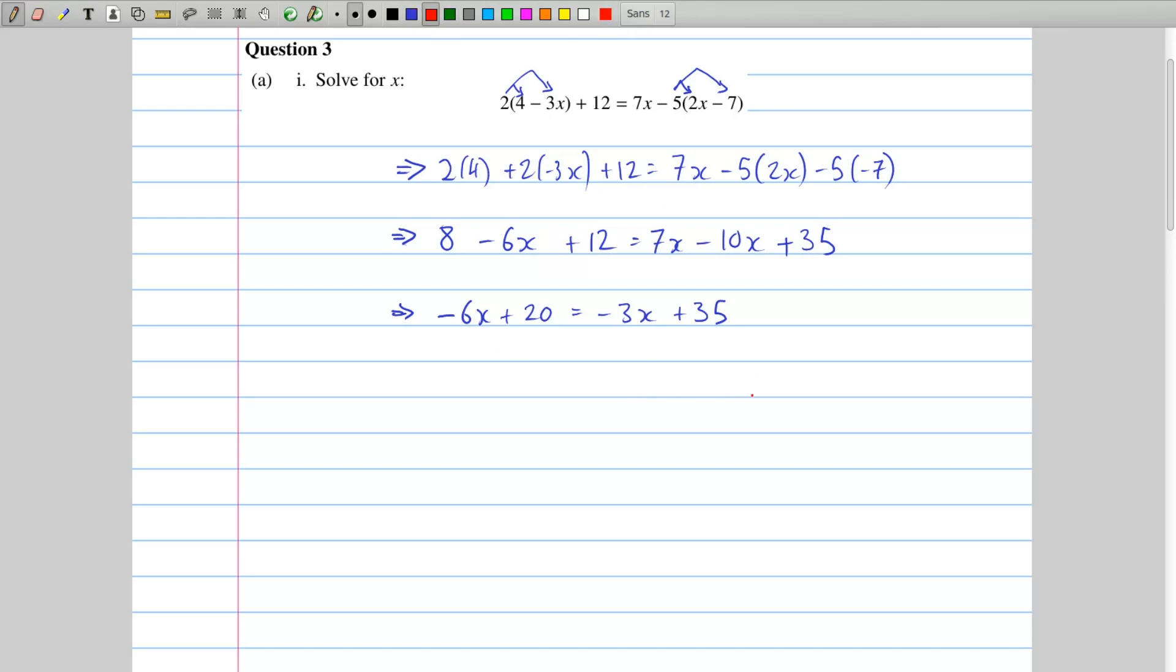Next comes the actual proper algebra part of this, where I try and get x equal to something. So I'm going to get all my x's on one side and all my numbers on the other side. I think the easiest way to do this is to try and get the x's on the right-hand side. So I'm going to add 6x to the left, and I'm going to add 6x to the right. You can also think of it as the minus 6 going across the equal sign, and so it changes to a plus 6. I also don't want the 35 here on the right-hand side, because that's where my x's are going to be, so I'm going to subtract 35 from there, and I'm going to subtract 35 from the left as well.